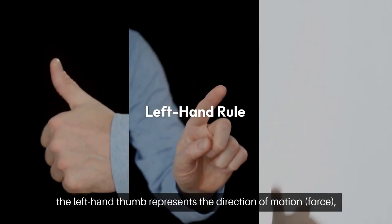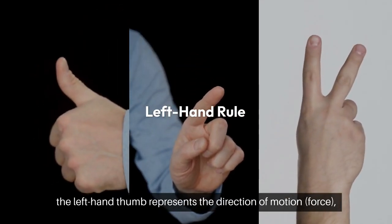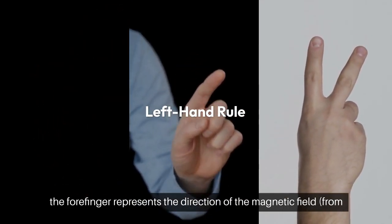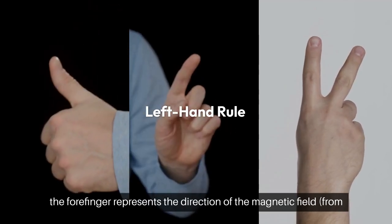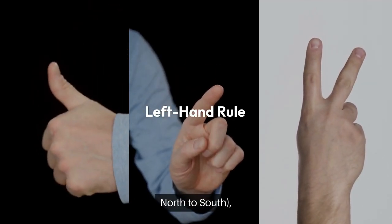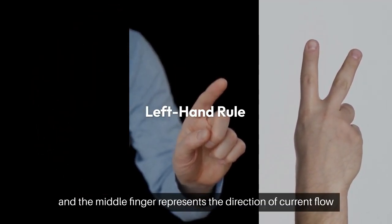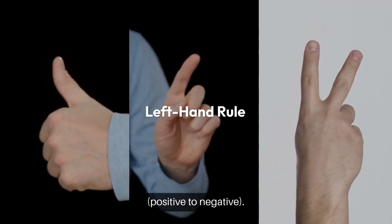In this rule, the left-hand thumb represents the direction of motion or force. The forefinger represents the direction of the magnetic field, from north to south, and the middle finger represents the direction of current flow, positive to negative.